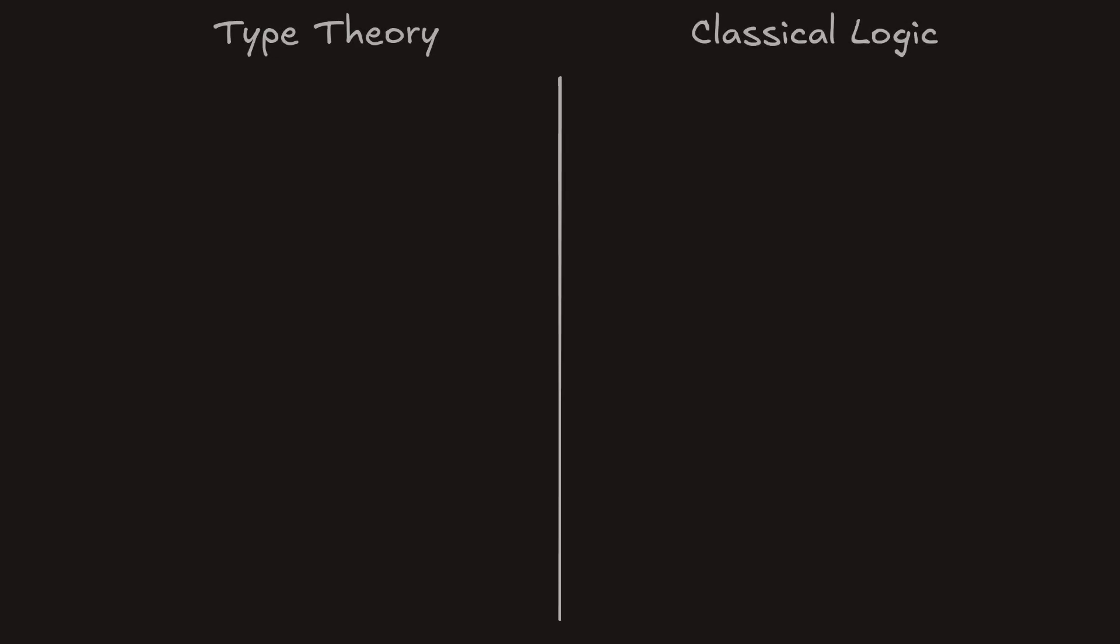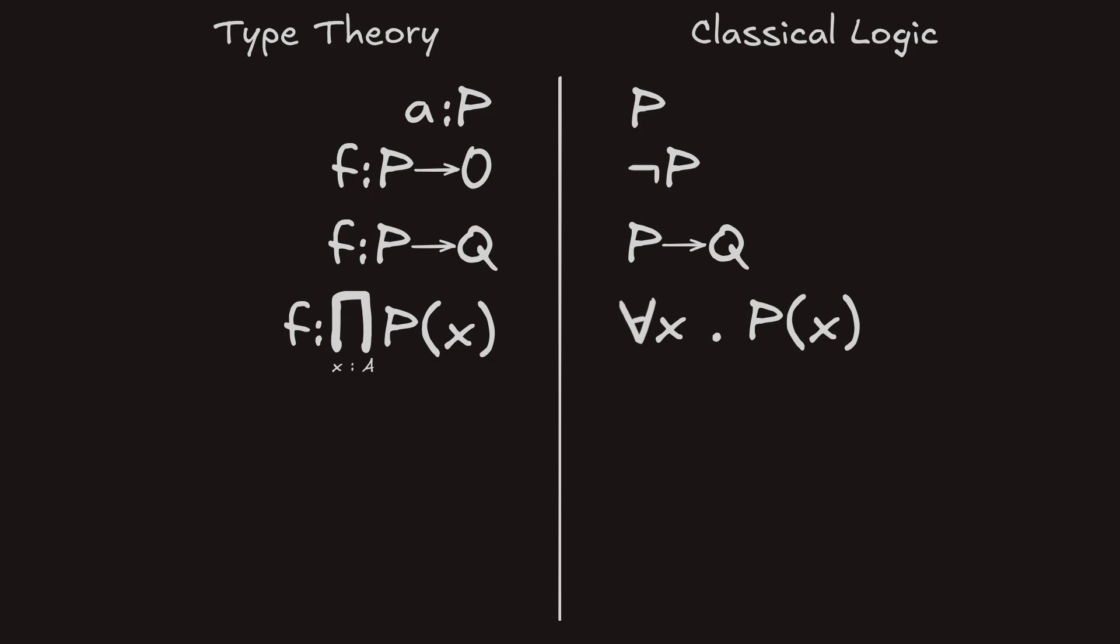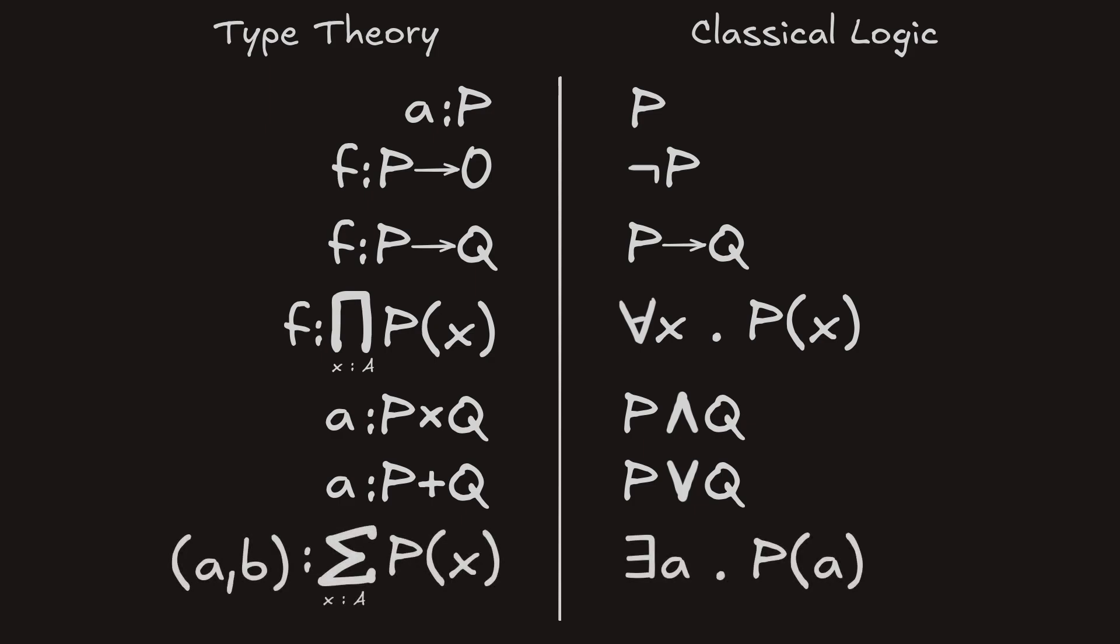To recap, we can now construct proofs, negations, implications, universal quantifiers, conjunctions, disjunctions, and existential quantifiers in type theory.